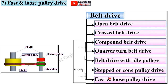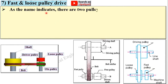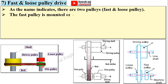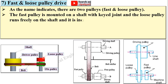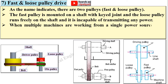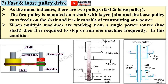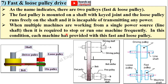Last: fast and loose pulley drive. Here, one is the fast pulley — sometimes called the fixed pulley — and the other is the loose pulley. The fast pulley is mounted on the shaft with a key joint, and the loose pulley runs freely on the shaft and is incapable of transmitting any power. When multiple machines are working from a single power source — called a line shaft — and it is required to stop or run one machine frequently, each machine is provided with a fast and loose pulley so you can stop or run the machine as desired.